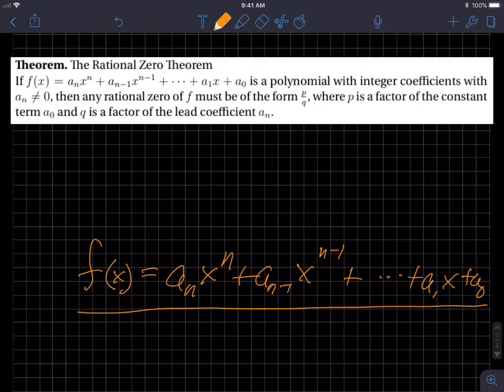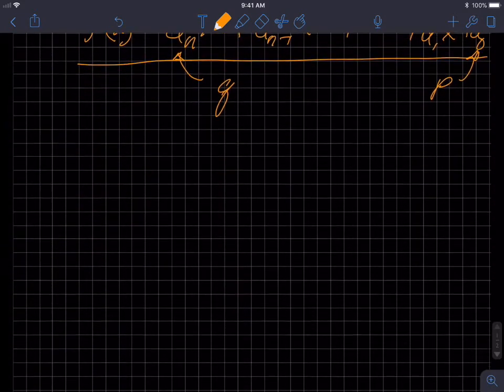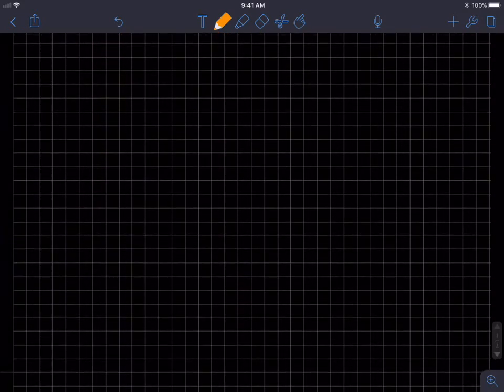And then they say, then any rational zero f must be of the form p over q. Now p, the numerator, is a factor of the constant term a sub 0. So p comes from that number, it's a factor of that number. And the q is a factor of that number. So what we end up doing, sliding this up and giving a real example,